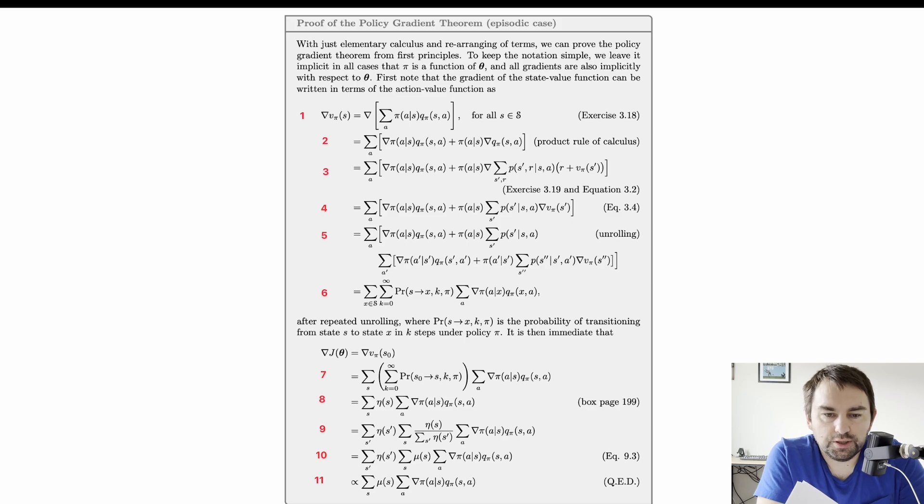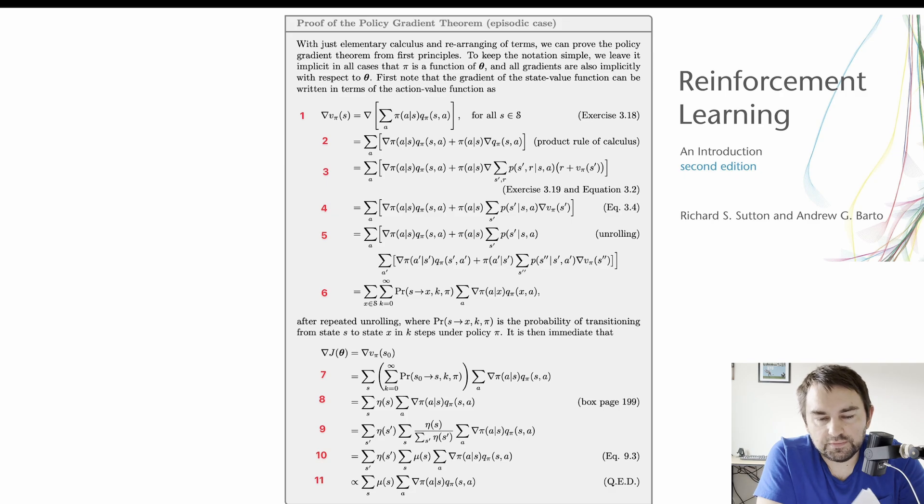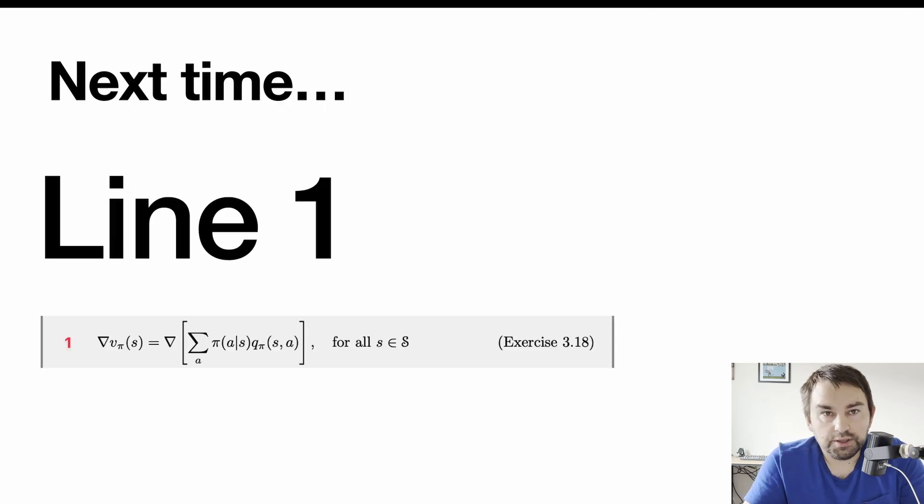Now let's move on to the proof. Now here is the proof that we're going to go through. This is found on page 325 of the Introduction to Reinforcement Learning, second edition, by Sutton and Barton. So what I will do here is number each line of the proof so we can go through each line separately. So next time we'll actually start our proof with the first line. If you'd like to skip ahead, you can do the exercise 3.18 in the book and you'll have the first line of the proof done. Alright, see you next time. Bye-bye.